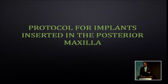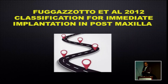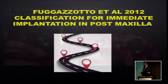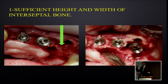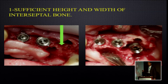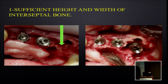Protocols for implant insertion in the posterior maxilla give us a map to follow. First, immediate post-extraction implantation: Fugazuto in 2012 put forward a classification. His first choice after extraction was to check the residual interradicular bone. If it's of sufficient height and width, he places the implant inside the interradicular bone. In daily practice, we found interradicular bone may contain a large amount of bone that can withstand an implant — essentially converting an immediate post-extraction case to a regular case because the implant is completely embedded within bone.